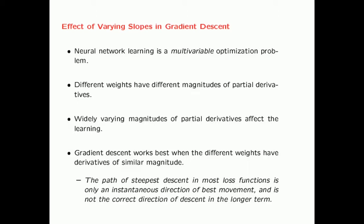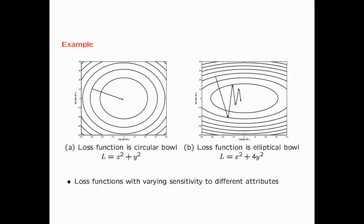In general, when you have very different sensitivity of the loss function with respect to different features, the nature of the gradient is often good for very small steps of gradient descent. The path of steepest descent in most loss functions only gives you an instantaneous direction of best movement and it is not the correct direction of descent in the longer term. In general, what you want is that the different weights have derivatives of similar magnitudes. In order to understand the nature of the sensitivity of the loss function with respect to different features, we are going to look at a very simple example.